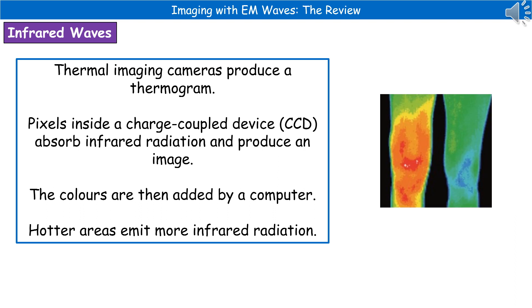The way we get that image is by using something called a charge-coupled device, or CCD. It absorbs the infrared radiation and produces the image with colours that are then added by a computer.